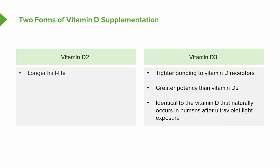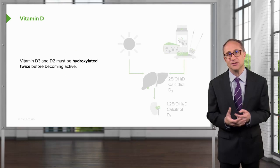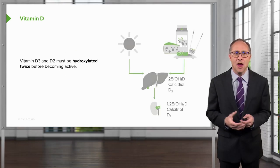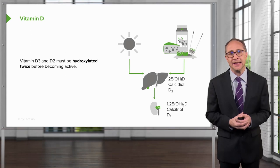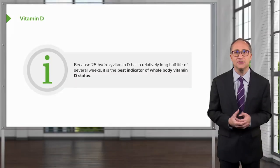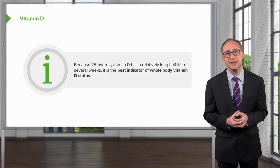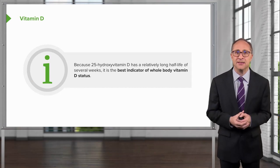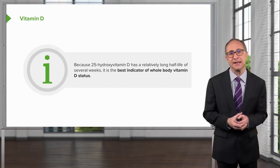Vitamin D3 is also identical to the vitamin D that naturally occurs in humans after ultraviolet light exposure. Both vitamin D3 and D2 must be hydroxylated twice before becoming active. The first hydroxylation occurs in the liver and converts vitamin D to 25-hydroxyvitamin D, otherwise known as calcidiol. The second occurs primarily in the kidney and forms the physiologically active 1,25-dihydroxyvitamin D, otherwise known as calcitriol. Because 25-hydroxyvitamin D has a relatively long half-life of several weeks, it is the best indicator of whole body stores of vitamin D.